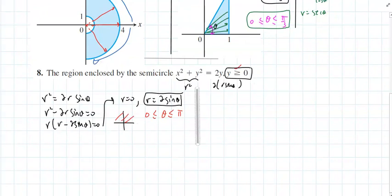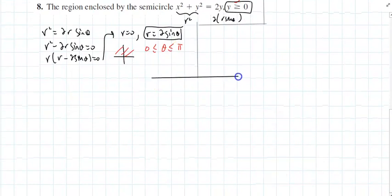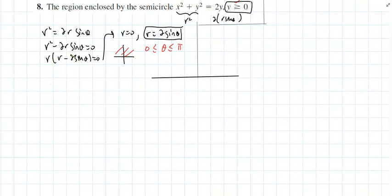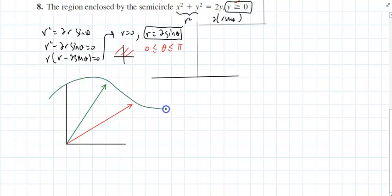Now if I want to find the area in polar coordinates - let me give it its own space. If I wanted to find the area, let's say I'm looking at a region. If I want to find the area between these curves from theta to beta, and the region I'm interested in is this shaded region.